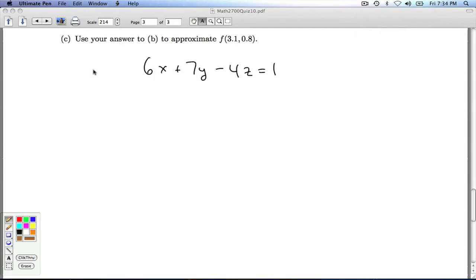All right, part c, we're going to use our answer to part b to approximate this function value. So remember, this is the tangent plane at the point 3 comma 1. And since we've proved that f is differentiable, we're going to approximate what's going on on the actual surface by what's happening on the tangent plane. So when we're asked to approximate this, remember, this would be the z value on the surface.